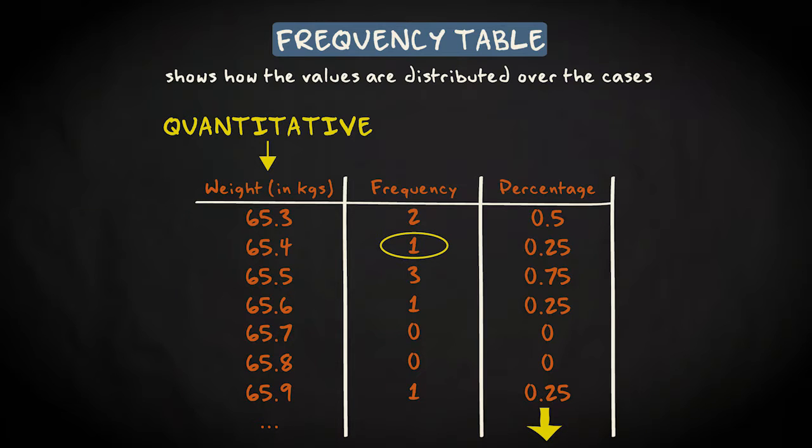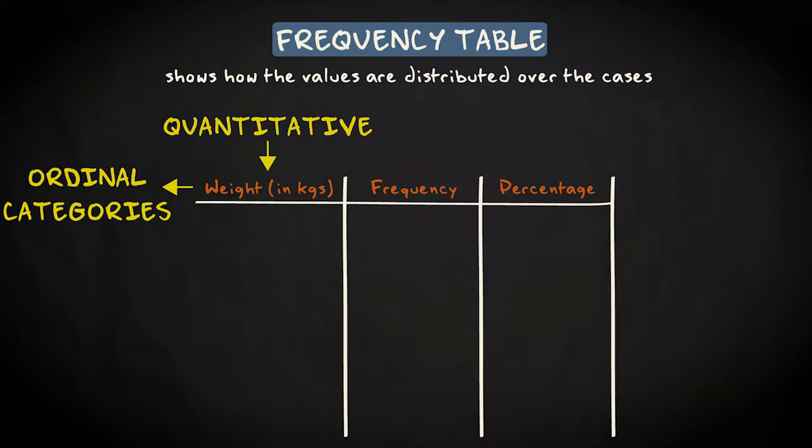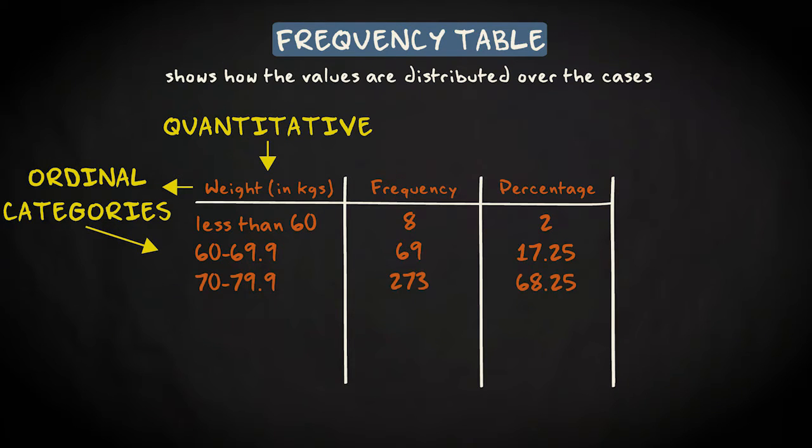What researchers usually do to solve that problem is building new ordinal categories by using intervals. You could say, for instance, that the first category contains those players who weigh less than 60 kg, the second those who weigh between 60 and 69.9 kg, the next one between 70 and 79.9, the following one between 80 and 89.9, and the final one 90 and more kg.